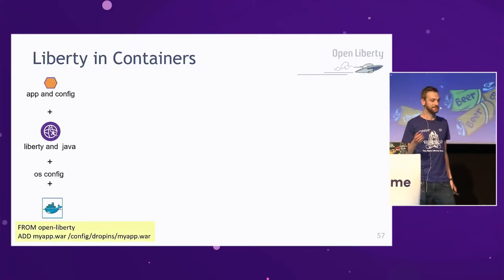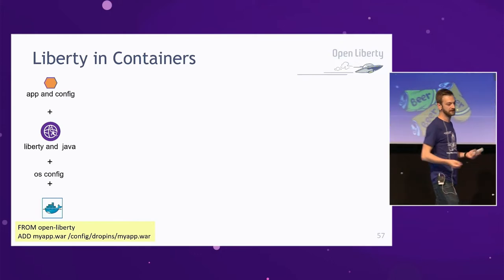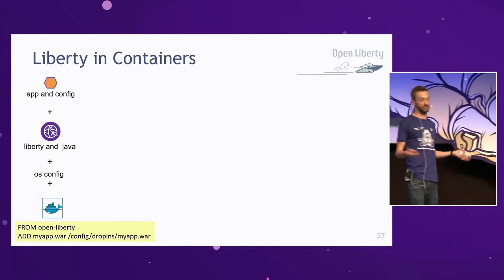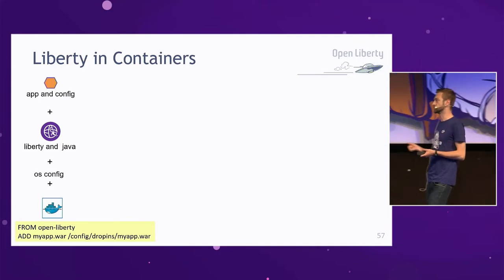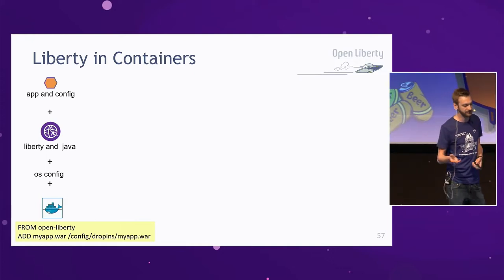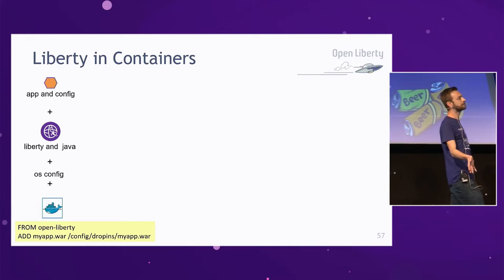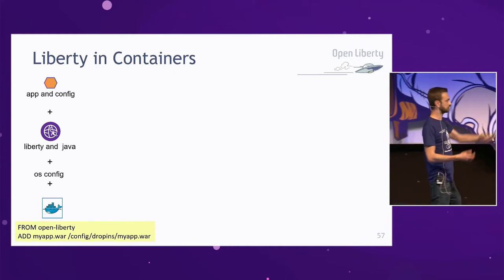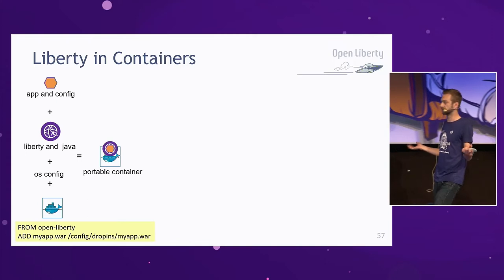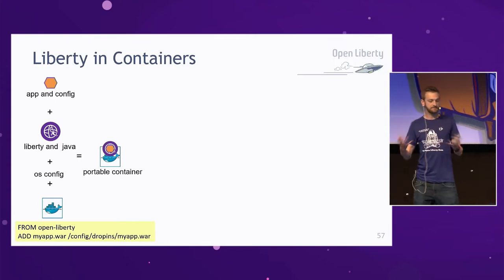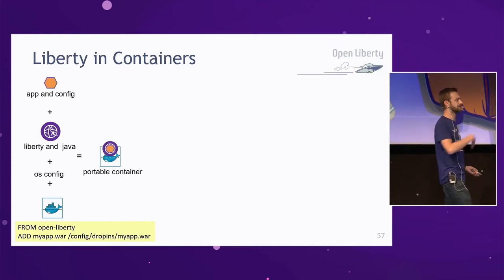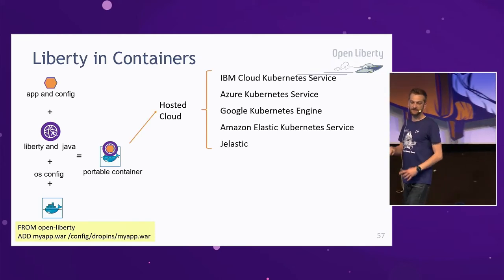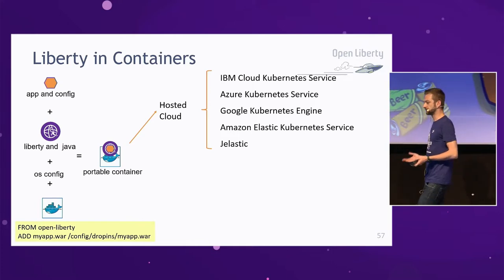With Liberty in containers, you have your application, your config, your runtime, and the OS level all sitting in Docker containers or whatever container technology you're using. It's very simple to get started — all I need to do is say 'FROM OpenLiberty,' which pulls down the latest Open Liberty image, then I just add in my WAR file and that's it. It will deploy, it will run. Containers are great — they're portable, so you can hand them to other people, and you're never really going to find a cloud that doesn't support containers.